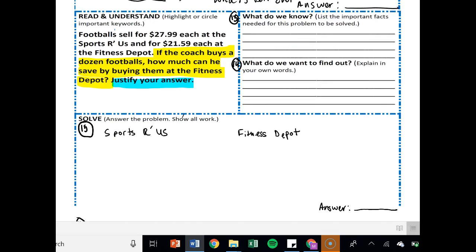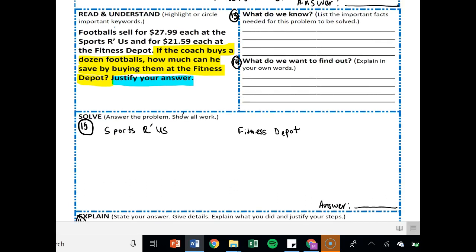And then the next one, footballs sell at Sports R Us for $27.99 and at Fitness for $21.59. If a coach buys a dozen footballs, how much can he save by buying them at Fitness? So there's two ways you could go about doing this. Actually, the way I had kind of set up for you is a long way. I was going to have you multiply $27.99 times 12 to see how much that was, and then I was going to have you multiply $21.59 times 12 to see how much that was, and then I was going to have you subtract the two. Why not? Let's just do something a little bit easier.